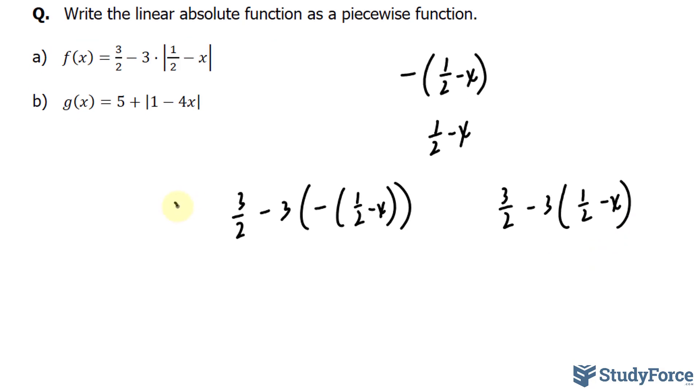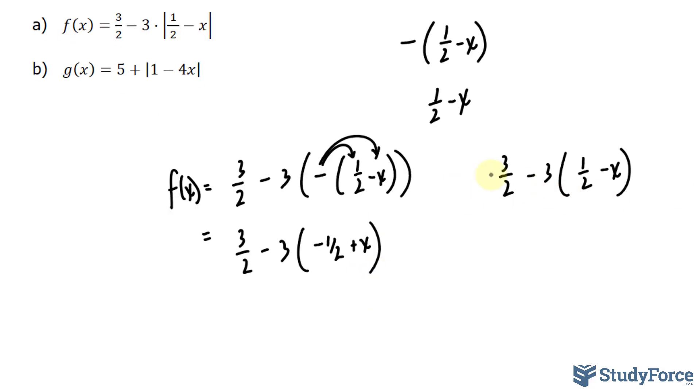We'll simplify this function, where we have 3 over 2 minus 3, and we'll multiply this negative inside, where we get negative 1 over 2 plus x. And I can do the other version at the same time. We'll multiply the negative 3 into here and into there, where we get negative 3 over 2 plus 3x.